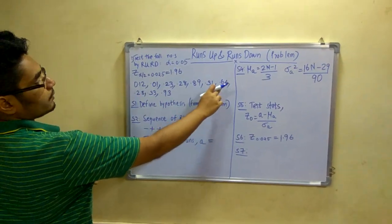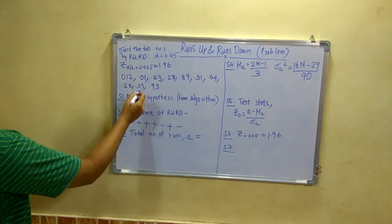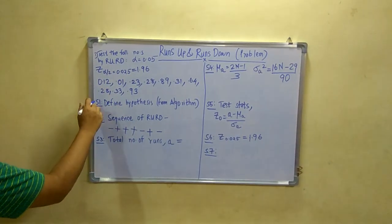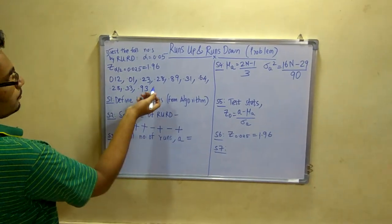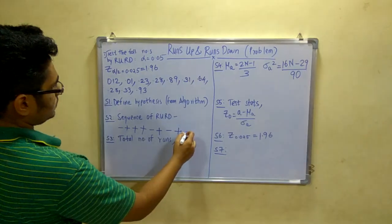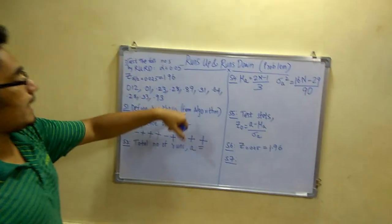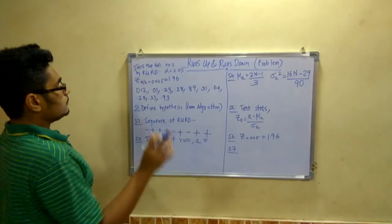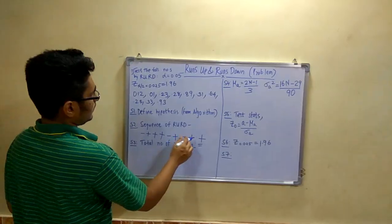Next, 0.28 minus 0.64, that is a negative value, so you will write minus. Next, 0.33 minus 0.28 is a positive value, so you will write plus. Next again, 0.93 minus 0.33 is a positive value, so you will write plus. Now remember that you have 10 numbers but you will get a sequence of only 9.